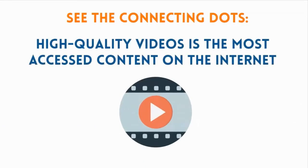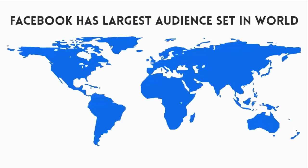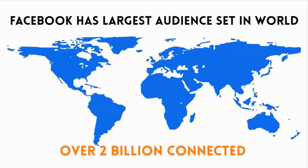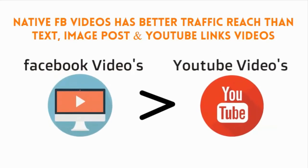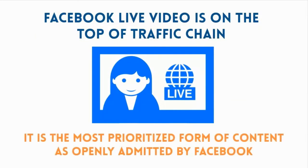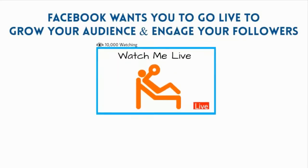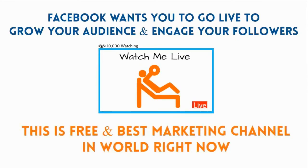High quality videos are the most accessed content on the internet. Video marketing is the most effective way of marketing. Facebook has the largest audience set in the world — over 2 billion connected. Native Facebook video has better traffic reach than text, image posts, and YouTube link videos. Facebook Live video is at the top of the traffic chain and is the most prioritized form of content, as openly admitted by Facebook. Facebook wants you to go live, to grow your audience and engage your followers. And the best part is, this is the free and best marketing channel in the world right now.